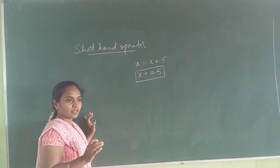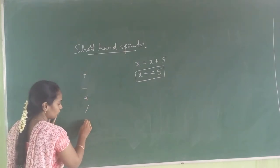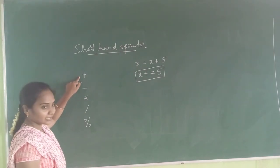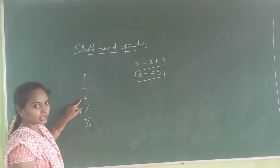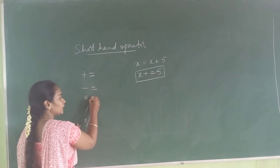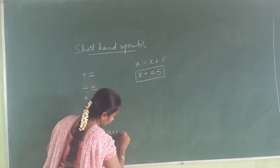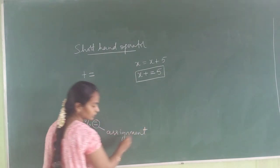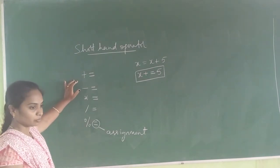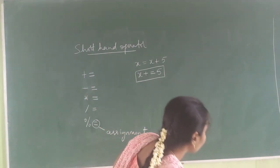In shorthand operators, we make use of arithmetic operators only — that is plus, minus, multiplication, division, and modulus. But along with these, we write an equal-to symbol, which is the assignment operator. Using these shorthand operator symbols, we are going to reduce the length of an expression.